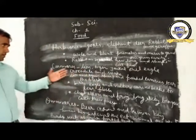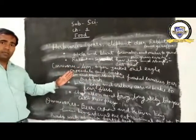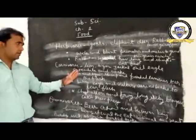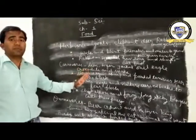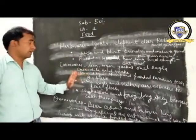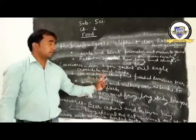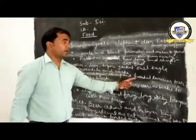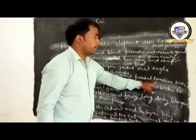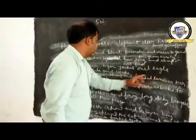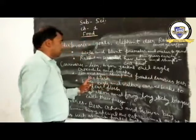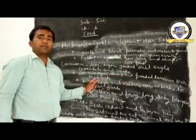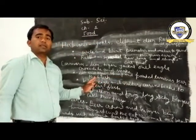These different types of animals eat their food with the help of different types of teeth. Like a lion and tiger, they have sharp and pointed canines. With the help of their canine teeth, they tear their flesh.